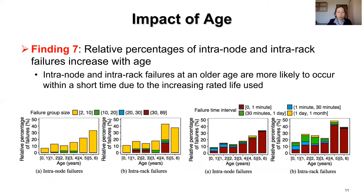We analyze the impact of age of a failed SSD — for example, power-on years — until the failure occurs on correlated failures. We observe that the relative percentages of intranode and intrarack failures increase with age. Also, intranode and intrarack failures at an older age are more likely to occur within a short time due to the increase in rated life used.